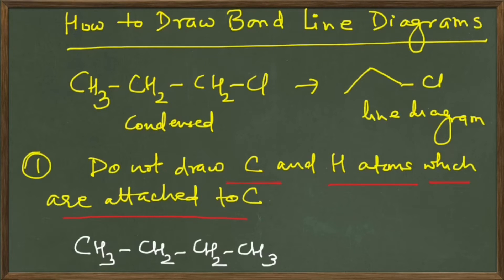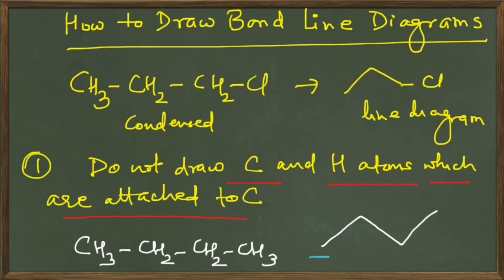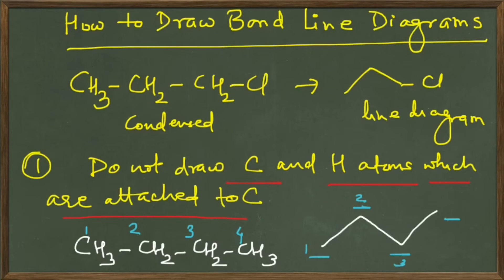What we will do is draw a zigzag line like this. Each corner of this line will contain a carbon atom. So a carbon atom is present here at this corner, here, and finally here. You can see that there are four carbon atoms in this formula, and therefore in our zigzag line we have one, two, three, and four carbon atoms. So you represent this structure with a zigzag line.